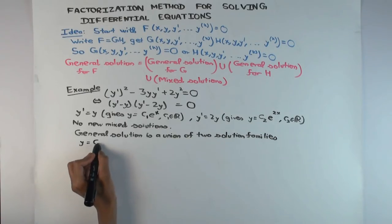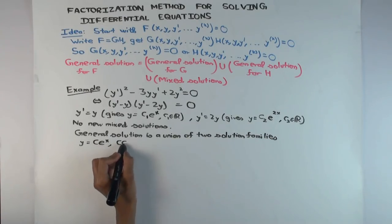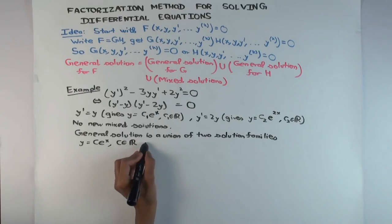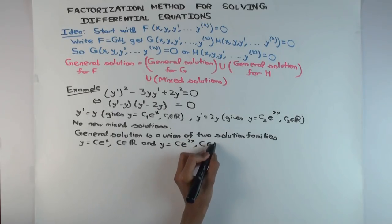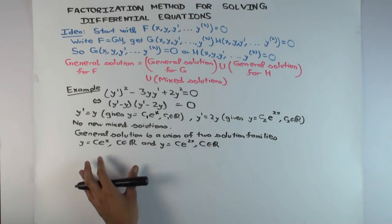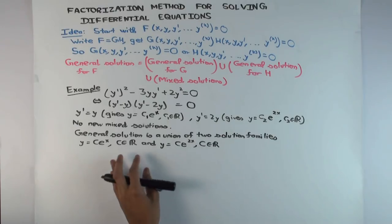So y is ce^x, c in R, and y is ce^(2x), c in R. And this c need not be the same as that c, it doesn't really matter. The point is it's just a one parameter thing. It's like a union of two lines is still considered one dimensional, not two dimensional. So the number of free parameters is one.